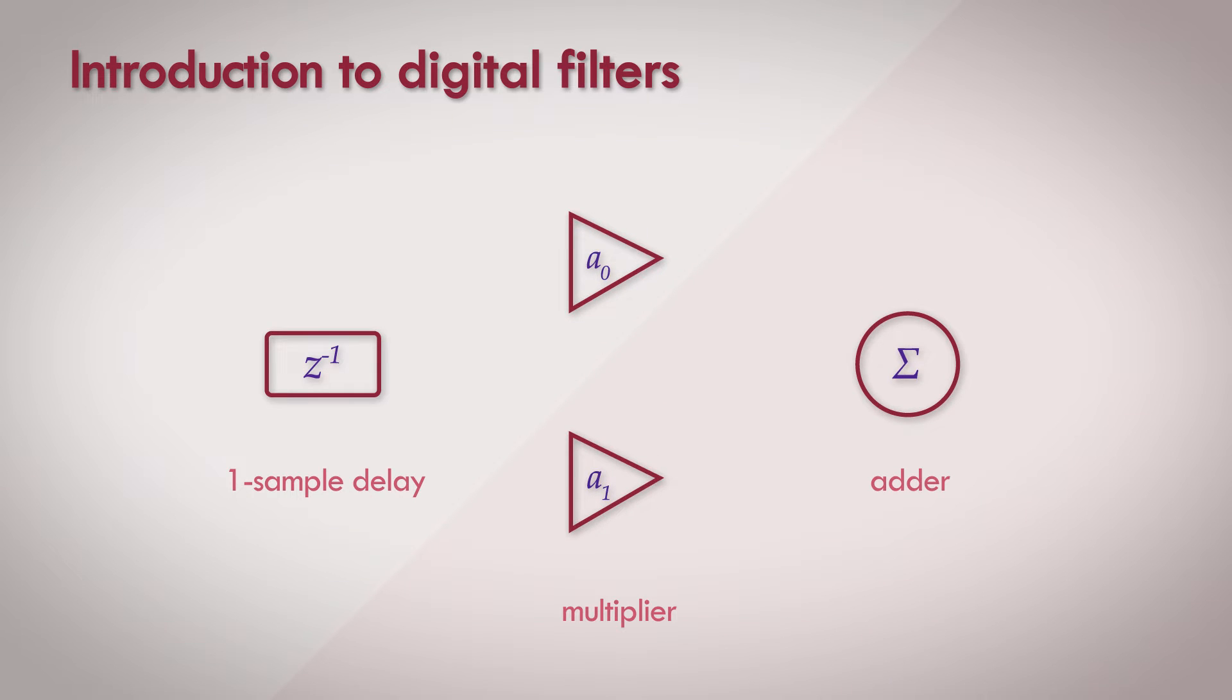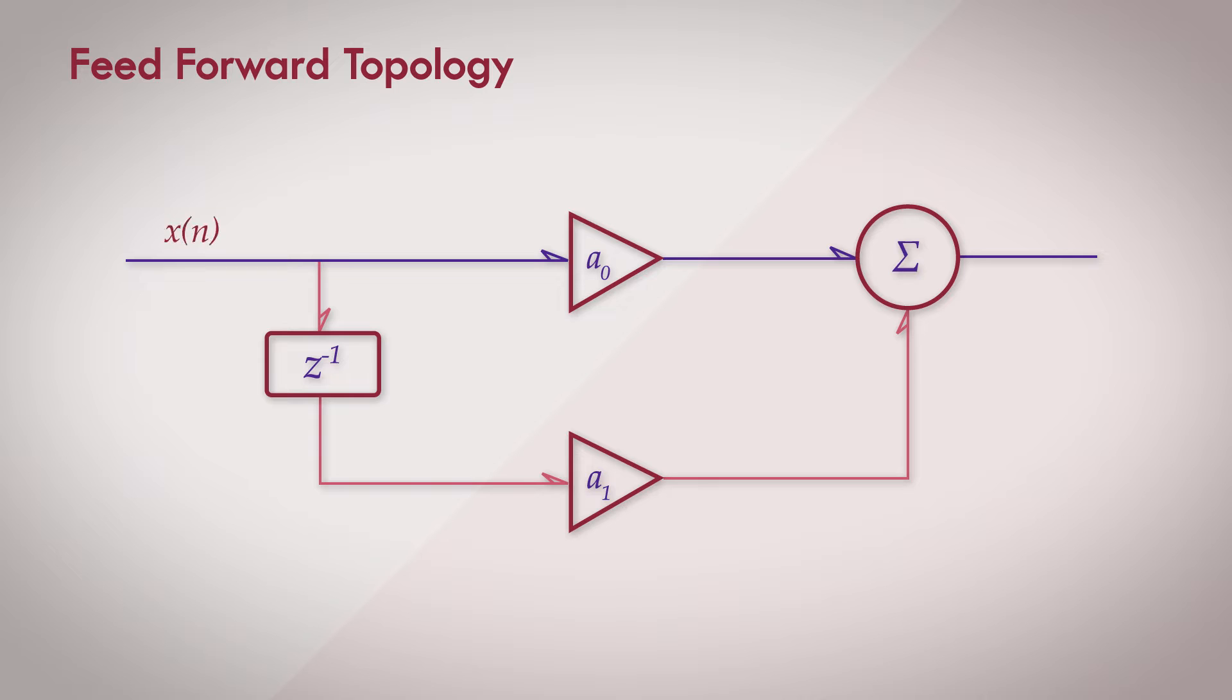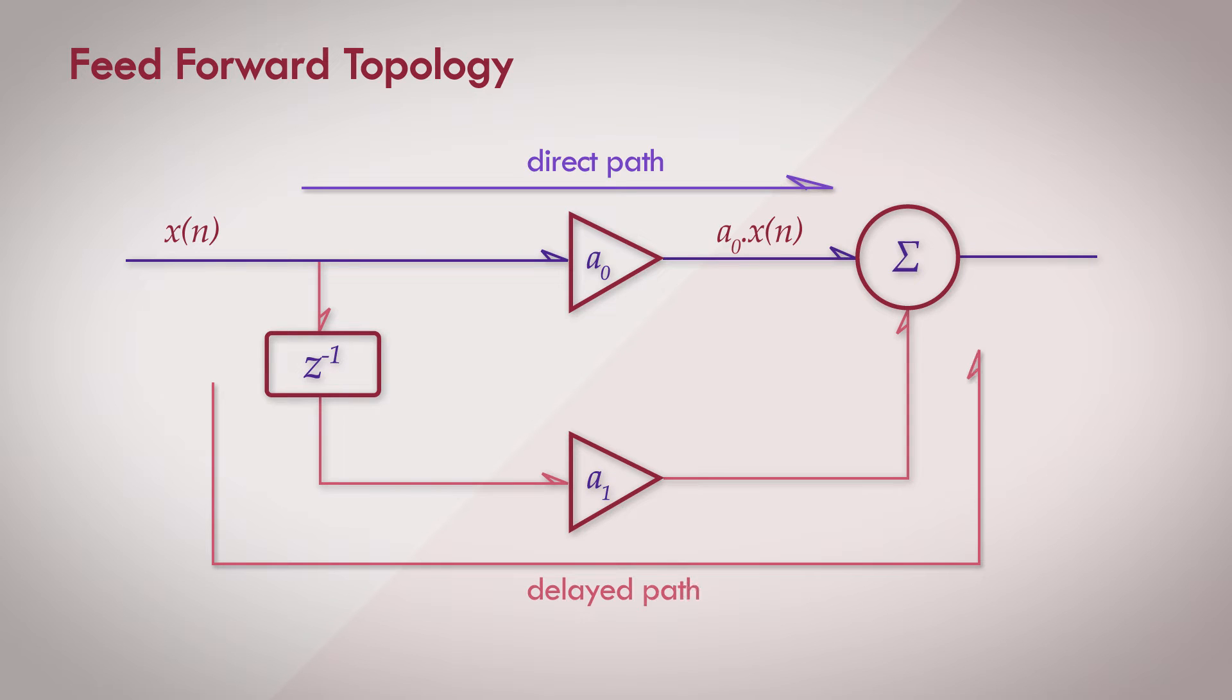A common filter topology that's used is a feed forward filter. The input signal passing through this topology will be split up into two different paths: a direct path to the adder multiplied or weighted by an amplifier with a coefficient of a0, and a delayed path through the one sample delay weighted with a coefficient of a1.